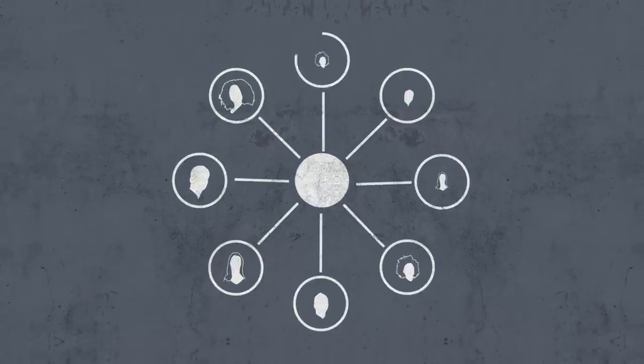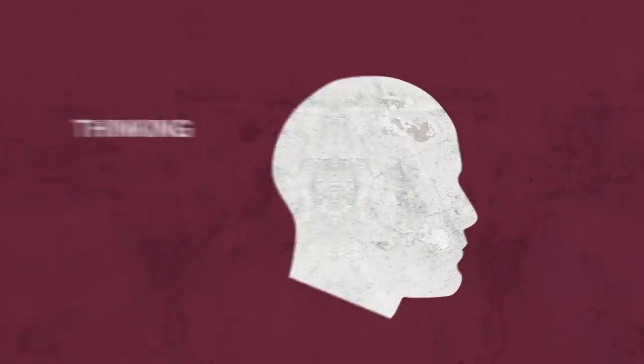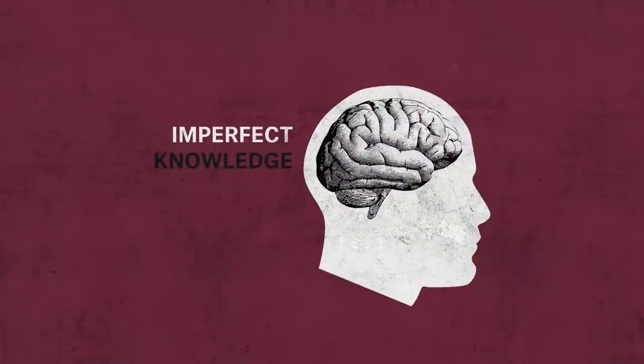But economics is a social science, and there is a fundamental difference between natural and social sciences. Social phenomena have thinking participants who base their decisions on imperfect knowledge. That is what economics has tried to ignore.